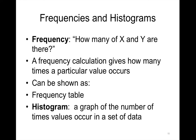Frequencies answer the question: how many of something is there? Recall that nominal data are things like names, labels, or categories of data. Examples of nominal data are patient names, genders such as male, female, and unknown, and marital status — married, single, divorced, widowed. Frequencies are primarily shown in a table format and also in a histogram, which looks like a column chart. A histogram is a graph of the number of times values occur in a set of data — in other words, the frequency of the values. It looks like a column chart in that it is a visualization of the distribution of values.